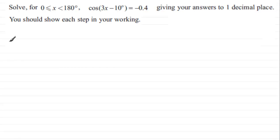Well first of all, what I want to do is just lay out the equation itself. We've got cos(3x - 10°) and this equals -0.4.